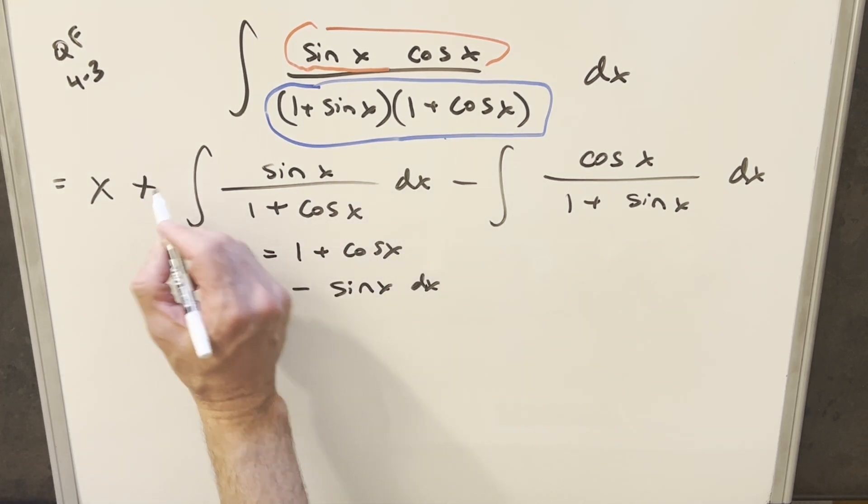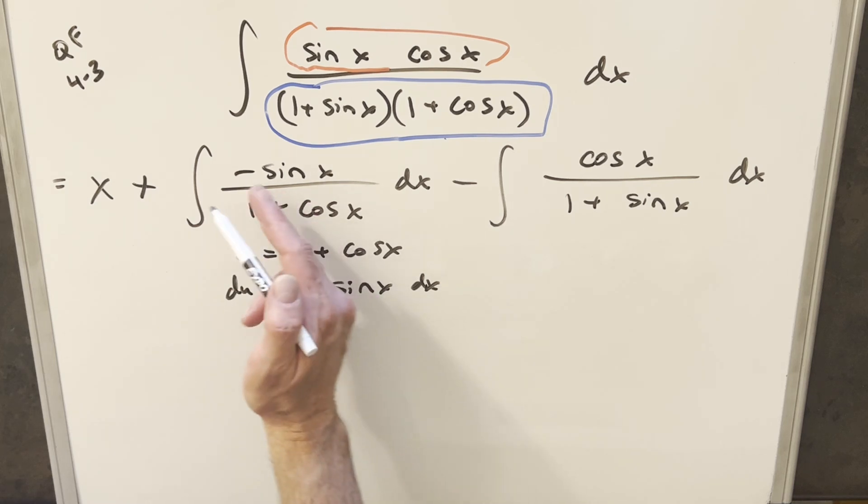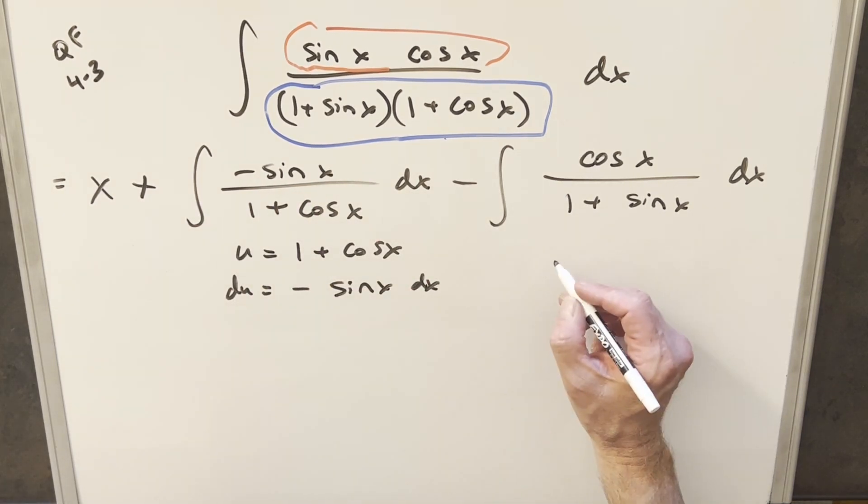Take a derivative, and this is going to become minus sine x dx. In order to create this, what I'm going to do... Let's just multiply in the minus sign right here. So that way we've got exactly our du in the numerator. And then over here,